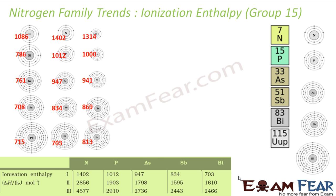The next topic is ionization enthalpy for Group 15 elements. Ionization enthalpy is the energy required to remove an electron from an atom. This is the amount of energy required to remove an electron.